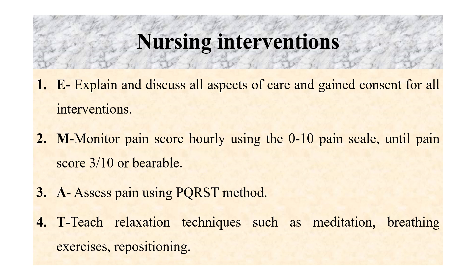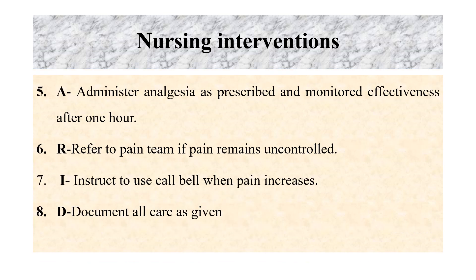Nursing interventions for this problem: First, explain and discuss all aspects of care and gain consent for all interventions. Second, monitor pain score hourly using a 0 to 10 pain scale until pain score is 3 over 10 or below. Third, assess pain using the PQRST method — P is provocation, Q is quality, R is radiation, S is severity, and T is timing. Fourth, teach relaxation techniques such as meditation, breathing exercises, and repositioning. Fifth, administer analgesia as prescribed and monitor effectiveness after one hour. Sixth, refer to the pain team if pain remains uncontrolled. Seventh, instruct the patient to use the call bell when pain increases. Eighth, document all care as given.